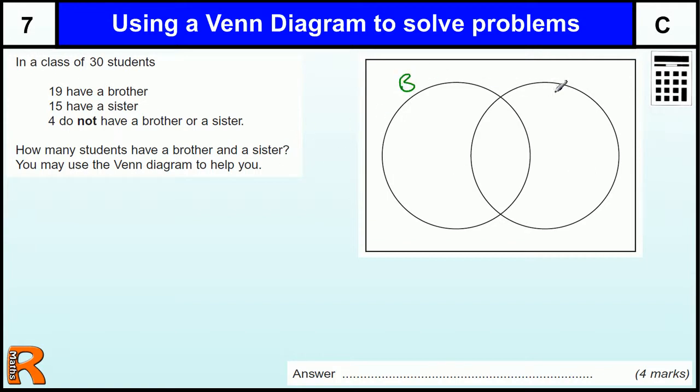We've got a group of brothers and a group of sisters. Thirty in total. Four don't have brothers or sisters so they can go on the outside. They're not inside the two circles. So that means we've got 26 students left.